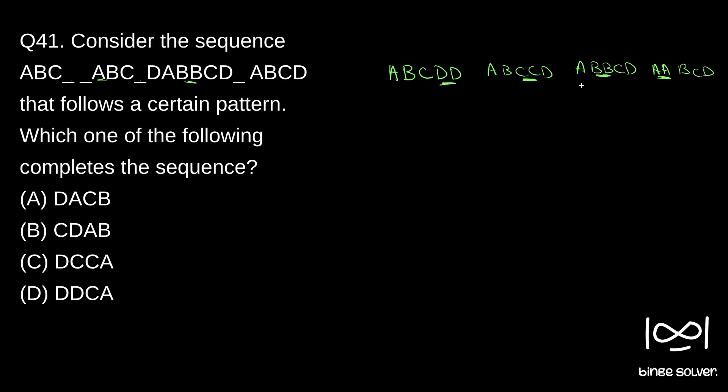That's the pattern. The blanks will be DD here, and here it will be C, and here it will be A. DD, CA. So the solution to question 41 is D, DDCA.